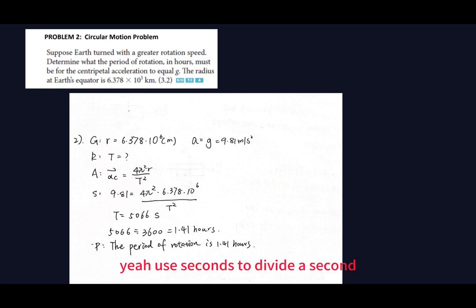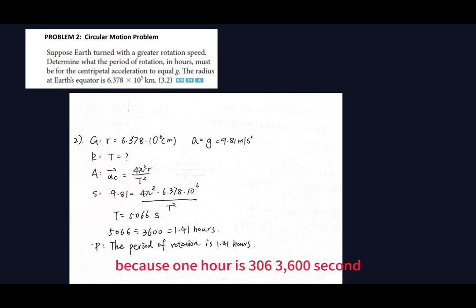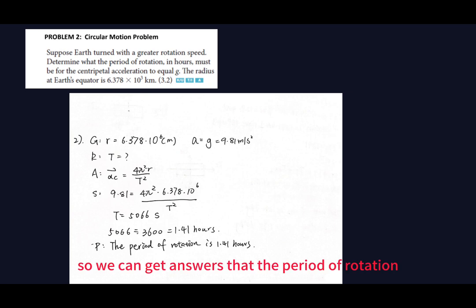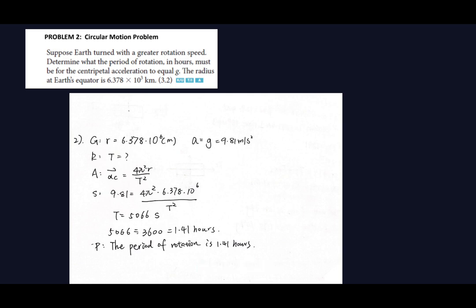Since one hour equals 3600 seconds, dividing gives 1.41 hours. So the period of rotation is 1.41 hours. That's all for the video — I hope you like it, see you next time.